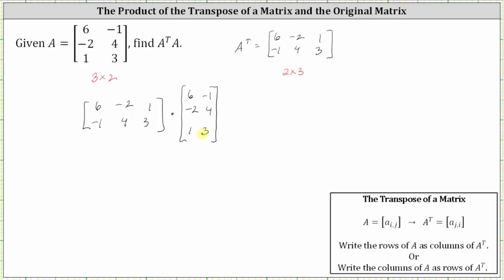First, we need to make sure the multiplication is possible. A transpose is a two by three matrix and A is a three by two matrix. In order for the multiplication to be possible, the number of columns in the first matrix must equal the number of rows in the second matrix, which we do have, and therefore we can multiply. The number of rows in the first matrix and the number of columns in the second matrix indicate the dimensions of the product, which means the product is a two by two matrix.